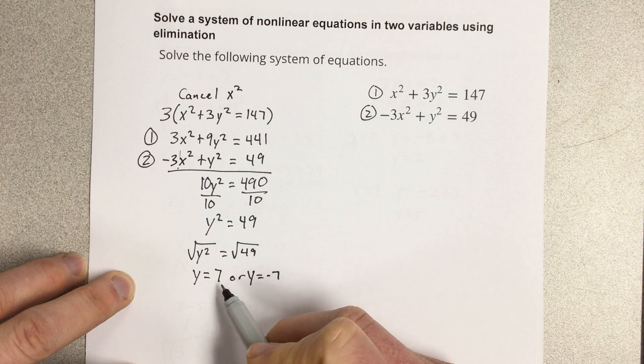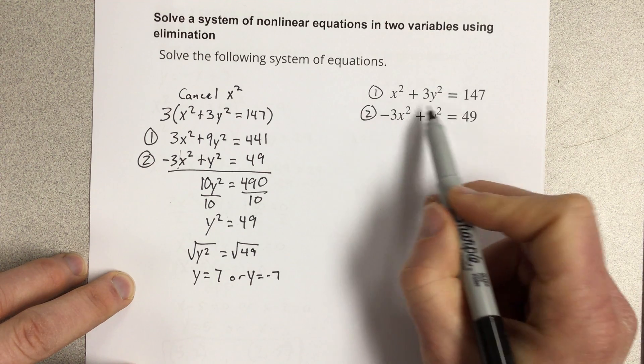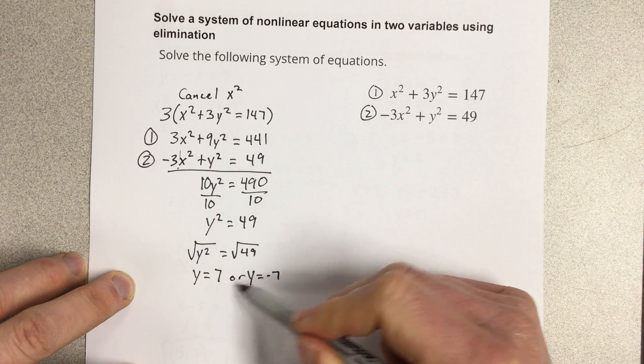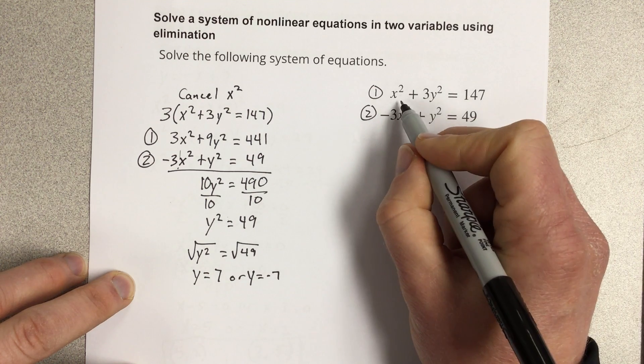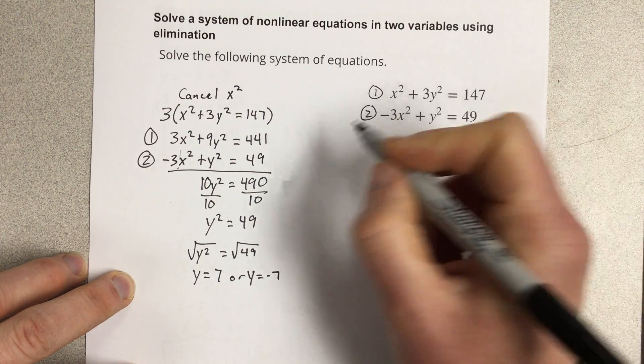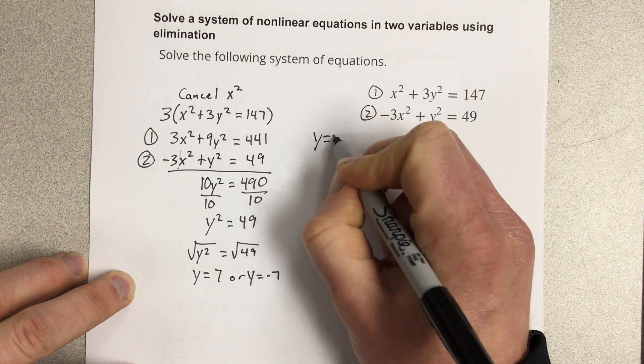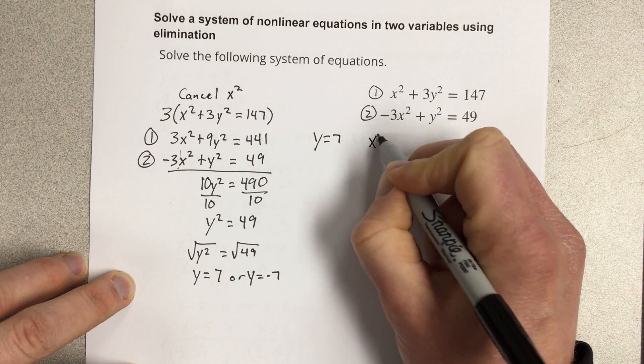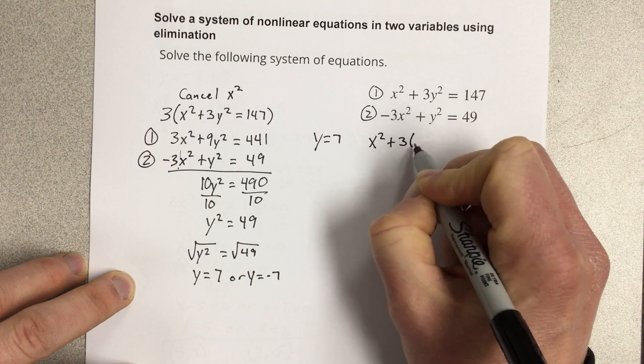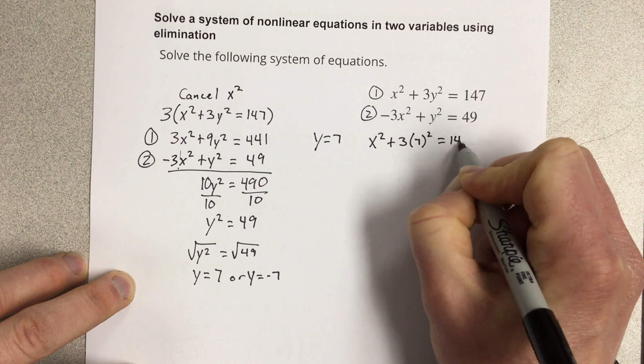Now I want to go back and find the x values that satisfy these y values. So let's plug 7 into the top equation. So if this is for y equals 7, we would have x² plus 3 times 7² equals 147.